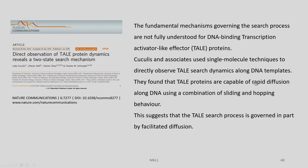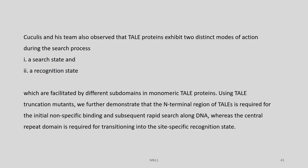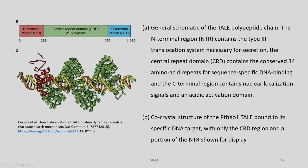What are these two-state search mechanisms? Overall, we need to remember that the TAL search process is governed in part by facilitated diffusion. Cuculis and his team observed that TAL proteins exhibit two distinct modes during the search process: a search state and a recognition state. These are facilitated by different sub-domains in monomeric TAL proteins. Using TAL truncation mutants, they demonstrated that the N-terminal region is required for initial non-specific binding and subsequent rapid search along DNA, whereas the central repeat domain is required for transitioning into site-specific recognition.